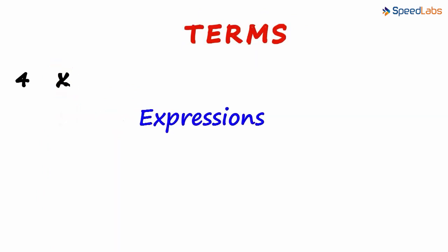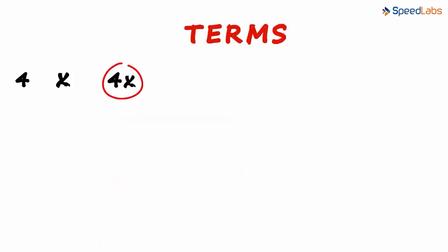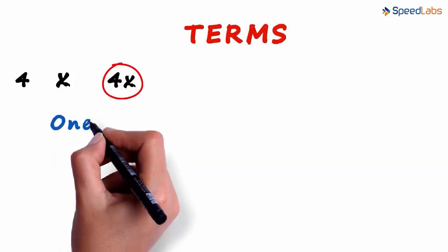Now let's look at a couple of expressions, like 4x. Two terms are multiplied here, 4 and x. Does this mean these are two terms? No, this is just one term.